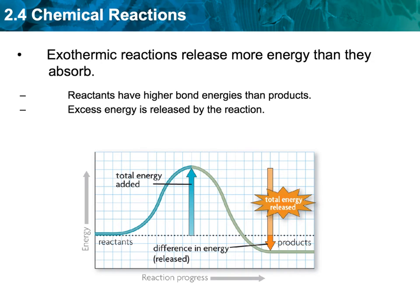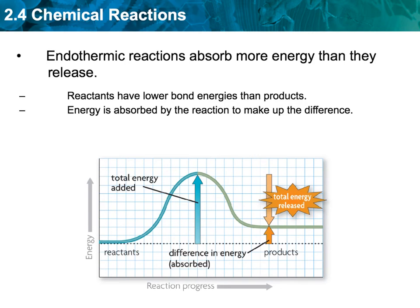Endothermic reactions absorb more energy than they release. In the endothermic graph, the reactants are visually lower than the products. If we see a graph like this and it doesn't tell us what it is, we know automatically it's an endothermic reaction because the reactants have a lower bond energy — products is higher, reactants is lower. Energy is absorbed more by the reaction to make up the difference. Endothermic reactions absorb more energy on the product side than on the reactant side.